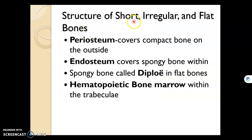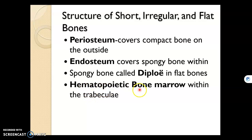When dealing with short, irregular, or flat bones — not long bones — there will not be an epiphysis and diaphysis, but there will be a periosteum and an endosteum. Occasionally we'll see hematopoietic bone marrow, which is red bone marrow, where blood is produced within the spongy bone, called trabeculae.